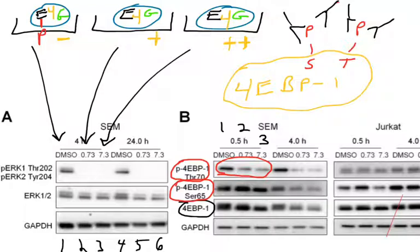This is something we're going to be seeing over and over. Hopefully now you can read a Western blot, decipher the data shown, and understand not only changes in total protein levels but also changes in phosphorylated protein levels.